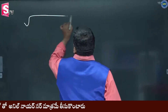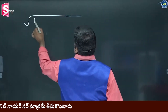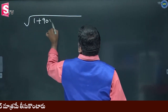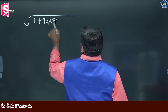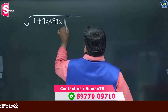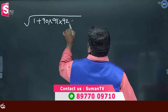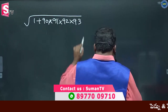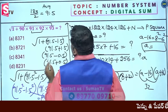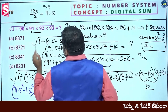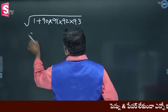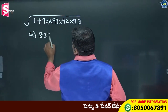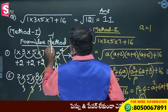1 plus 90, 91, 92, 93. The answer is 8371.